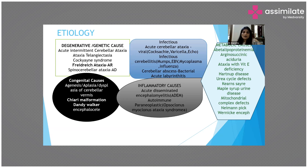Congenital causes include absence of the cerebellar vermis, as in Joubert syndrome, Chiari malformation, Dandy-Walker malformation, and others. These may all be congenital causes of cerebellar ataxia.